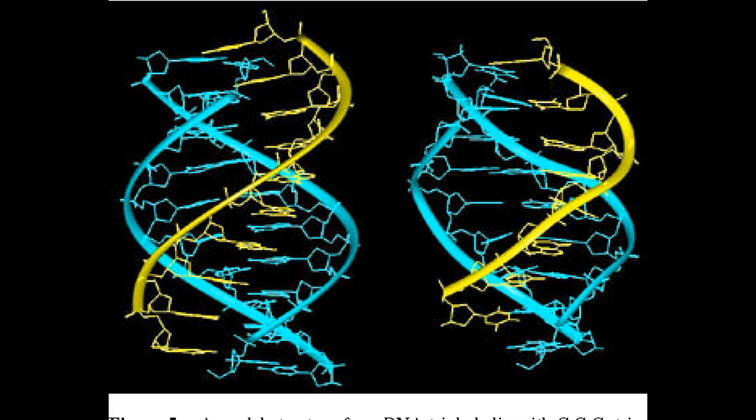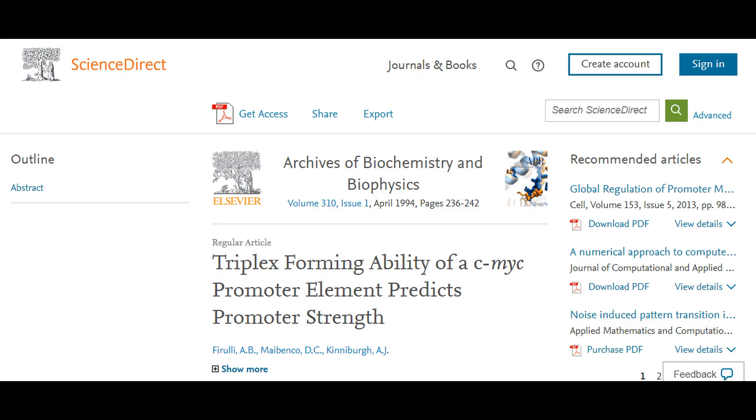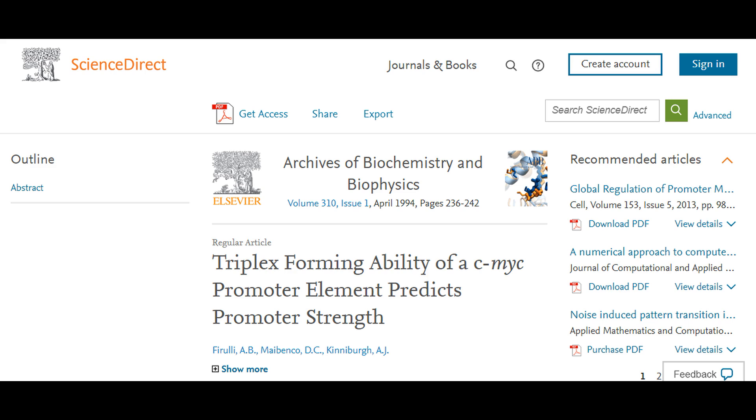Triple-stranded DNA is formed when the third strand binds in the major groove of a double-stranded B-DNA. There is some evidence that triple-stranded DNA plays a role in the regulation of certain genes. Triple-stranded and quadruple-stranded structures can also occur as three-way and four-way junctions respectively, which branch out into normal double-stranded DNA.